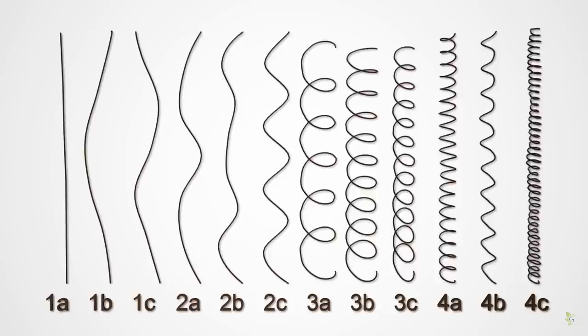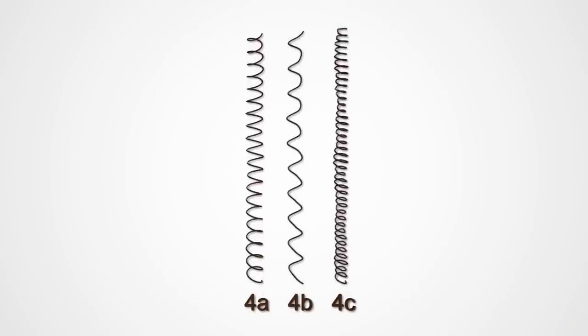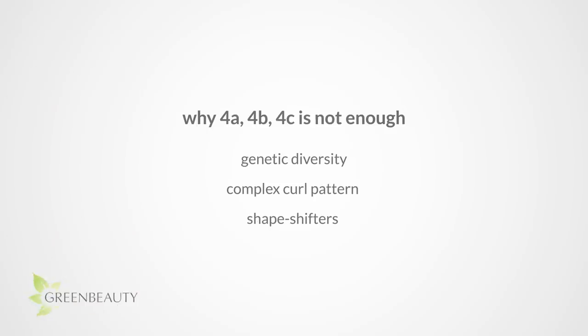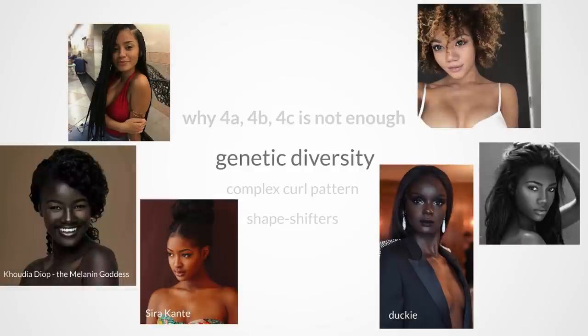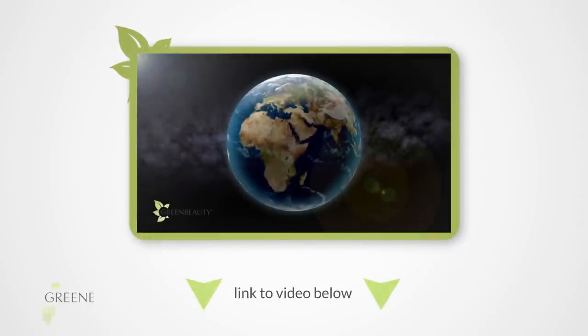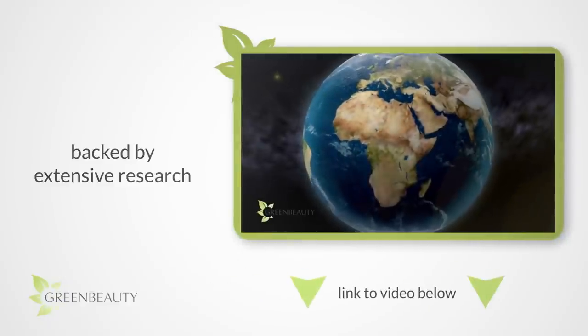It may make some sense around the ones, twos, and maybe some threes, but when you get to the fours, things get complicated mainly for three reasons. We are the most genetically diverse people on Earth. So we come in every color and we have multiple hair types on our head of hair. Below is a link to a video that goes over this genetic diversity in more detail.